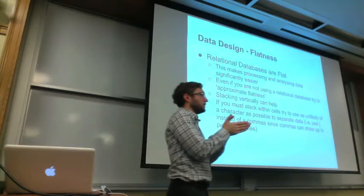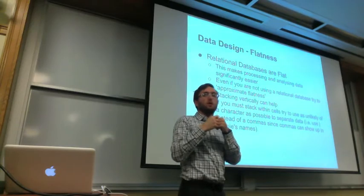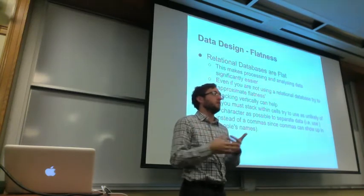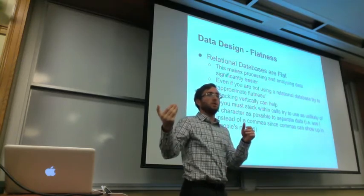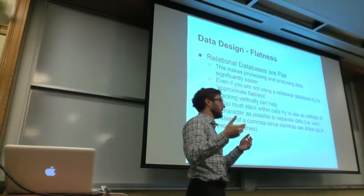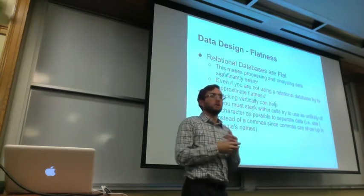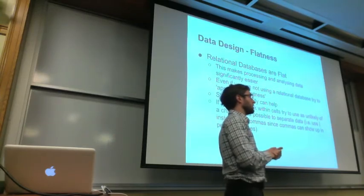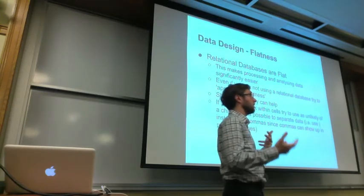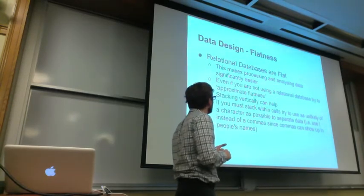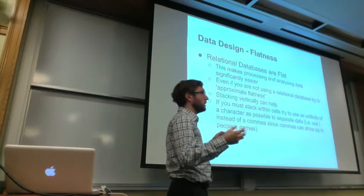People always really want to put two things in a cell. For example, when two people have gotten married, instead of having them separate with some identifier to show they're married to each other, people always want to say 'Bob comma Alice.' That can work in certain situations, but it does make computation significantly harder and makes it harder to clean up a database.